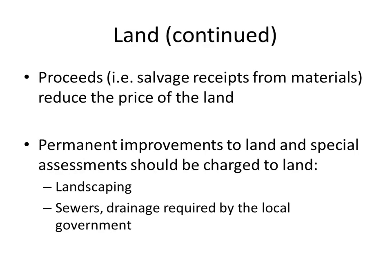There are a couple of other things we need to incorporate. Sometimes you have proceeds from salvage materials. Some people buy property for the stuff that's inside — like copper piping, for example. There's value a lot of times in things that the seller may either incorporate into the price or not, but the buyer may buy that property knowing there's value in those salvage materials. So the proceeds from that sale will reduce the price of the land.